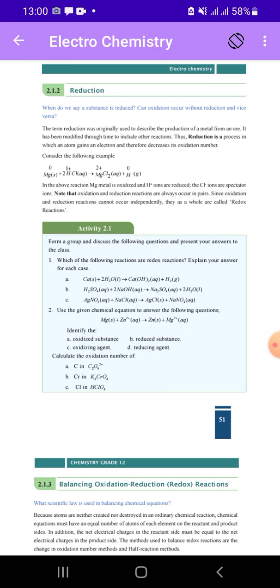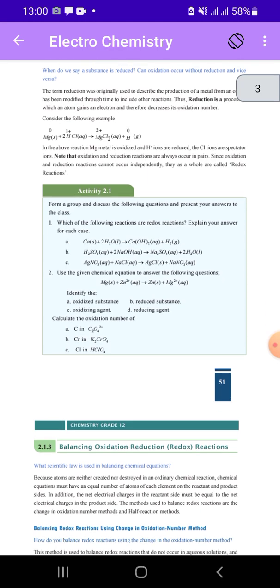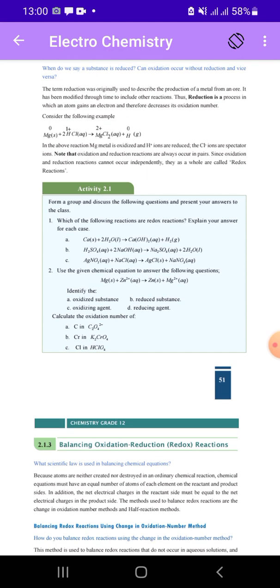Magnesium metal plus hydrochloric acid gives us magnesium chloride plus H2. In this case, magnesium is 0 but hydrogen was 1 plus, magnesium was 2 plus.